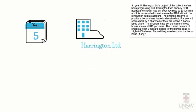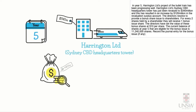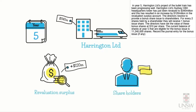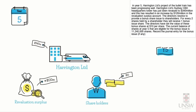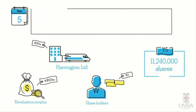In year five, Harrington Limited's bullet train project has been progressing well. The CBD headquarters tower has been revalued to $340 million, resulting in an increase of $120 million in the revaluation surplus account. The directors resolve to provide a bonus share issue — for every two shares held, a shareholder receives a $1 bonus issue share, valued at $10 per share. The shares eligible for this bonus issue total 11,240,000.